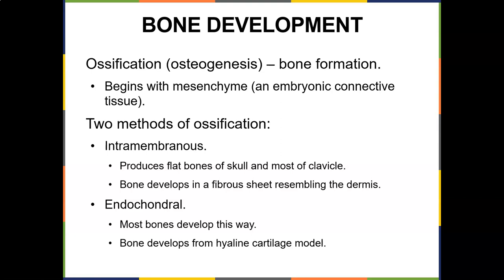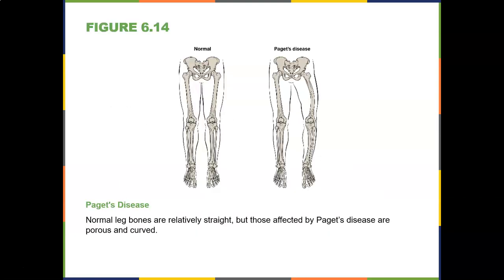Endochondral ossification has two steps: first, chondrification, in which embryonic mesenchyme condenses and differentiates into a hyaline cartilage model in the shape of the bone; then ossification, in which the cartilage is broken down and replaced by bone. Paget's disease is one example of what can go wrong — causing porous and curved long bones compared to normal straight ones.